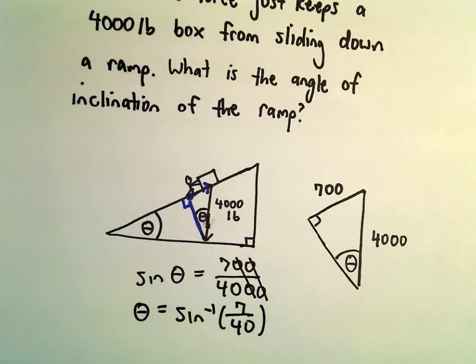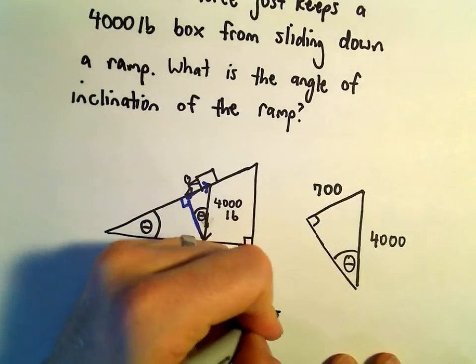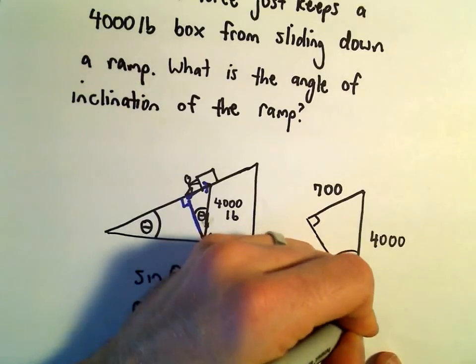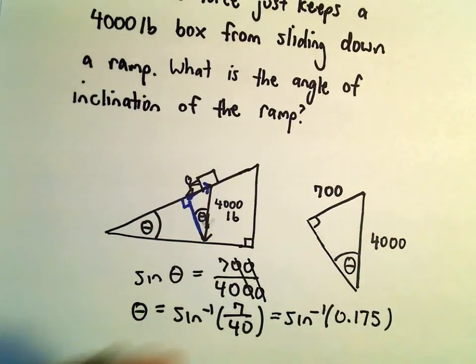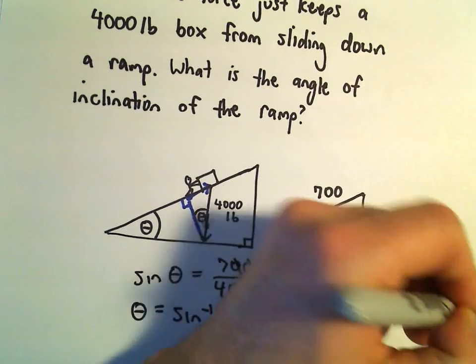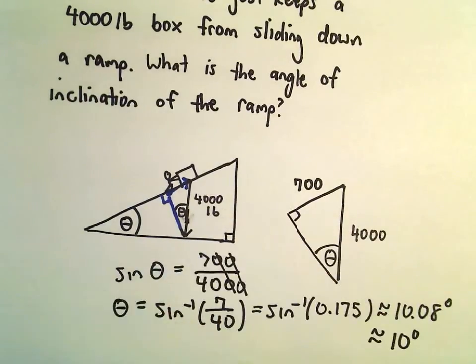So plug this in the calculator here. 7 divided by 40, that's just going to be 0.175. And now if we do arc sine of that, I'm getting this to be roughly 10.08 degrees, which I'm just going to round off to 10 degrees. So the angle of inclination of the ramp is right at 10 degrees.